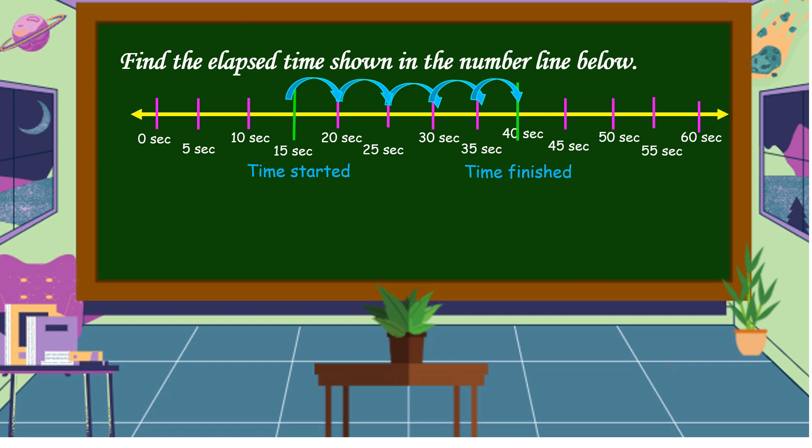We can use also subtraction. So, time finished at 40 seconds and time started at 15 seconds. So, 0 minus 5 cannot be but borrow 1 from 4. 4 becomes 3 and 0 becomes 10. 10 minus 5 is equal to 5, 3 minus 1 is equal to 2. This is 25 seconds, the elapsed time.